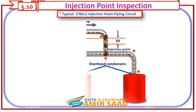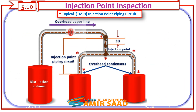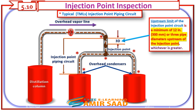Typical thickness monitoring locations of an Injection Point Piping Circuit: the upstream limit of the Injection Point Circuit is a minimum of 12 inches, or 3 pipe diameters upstream of the Injection Point, whichever is greater.